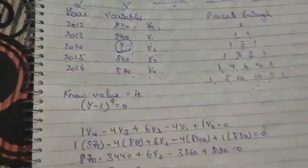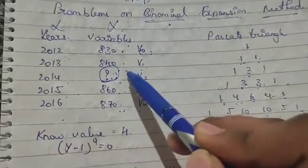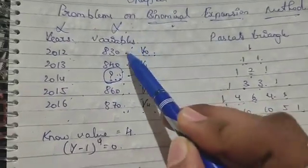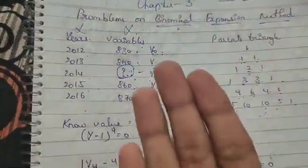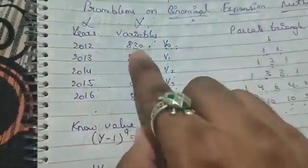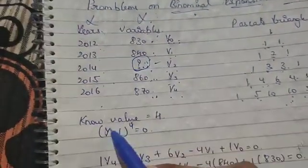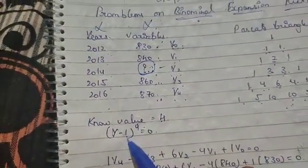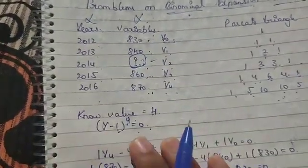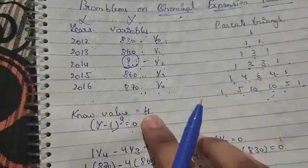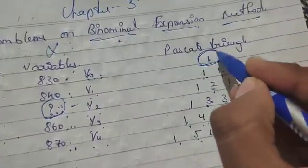'Known value' refers to how many values you know. Here there is one question mark, so leave that one and count the rest: one, two, three, four. You know four numbers, so you write 'known value = four.' The formula is: y minus one, power four, is equal to zero.